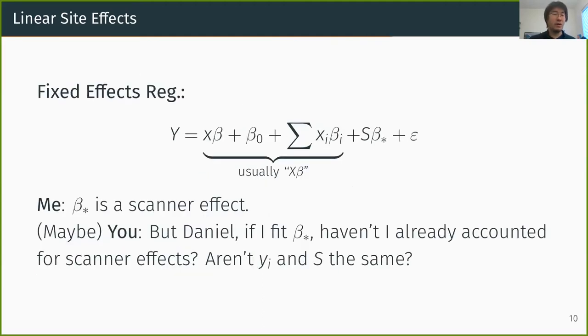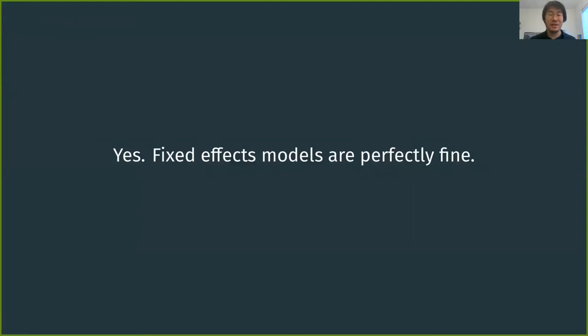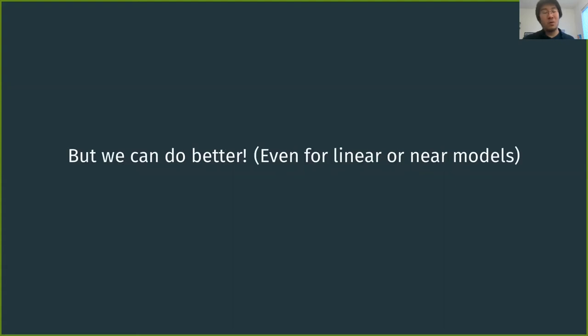So, if we've already fit our OLS regression, so we fit the regular least squares, and we're saying beta star is the scanner effect, then haven't we, like you might be saying, we've already corrected for side effects by including them as a covariate. And you would be right, actually. Fixed effects models, so regular OLS models with dummy variables for every site, that's perfectly fine. That is a good way of doing business. We can do better for linear or near-linear models, but it's okay, I want to say this, it's okay to do fixed effects.